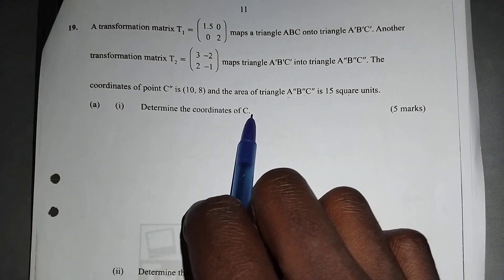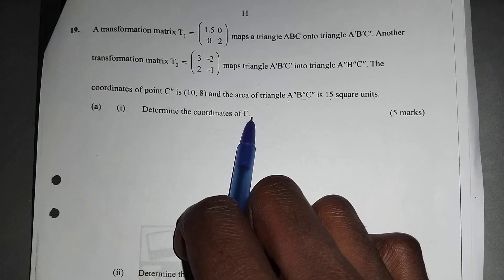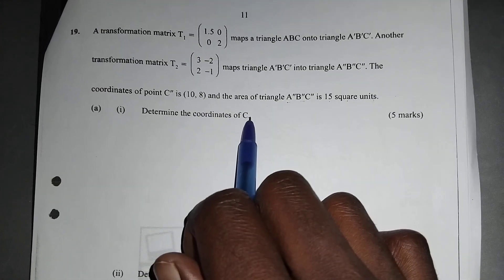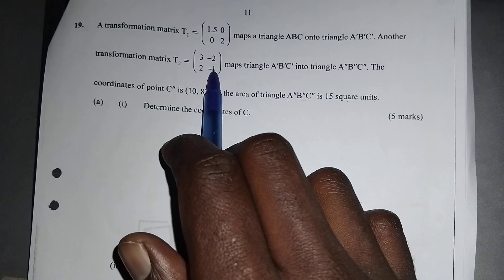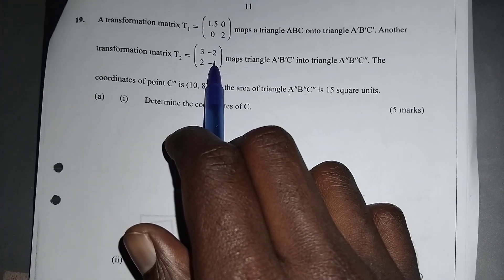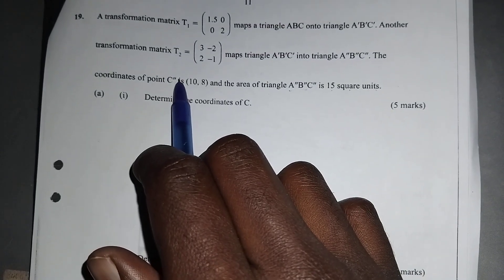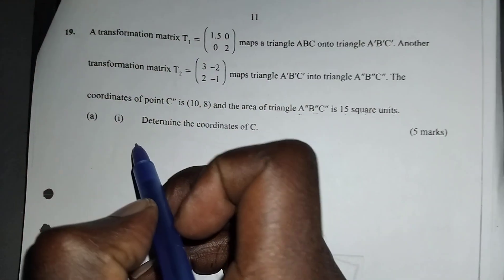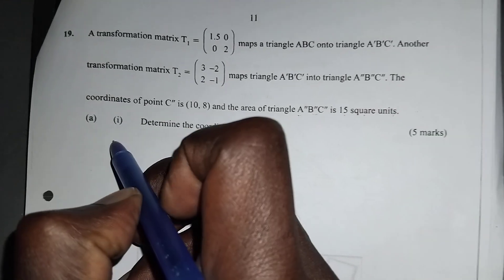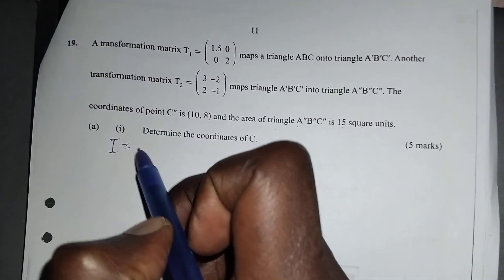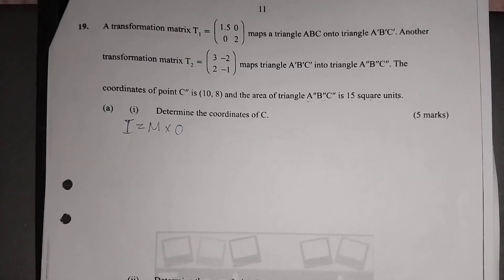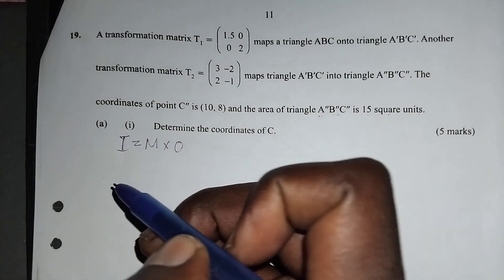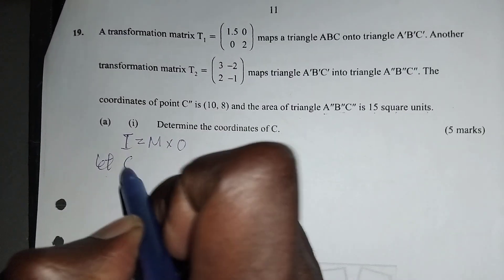We need to determine the coordinates of C, which is the original point. The original C is transformed by matrix T1 to give C', then again transformed by matrix T2 to give C''. We are given matrix T1 and matrix T2. So let C be (X, Y).